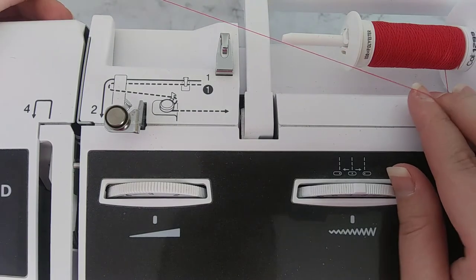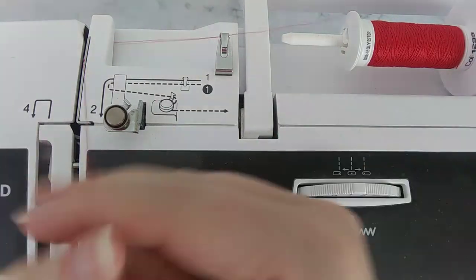We follow along on the dotted line so we can wind our bobbin.